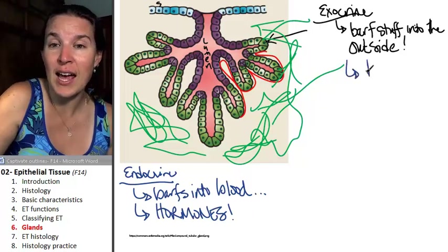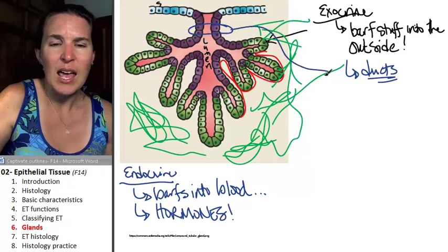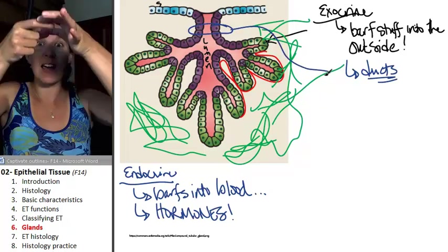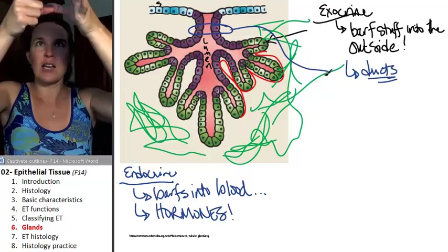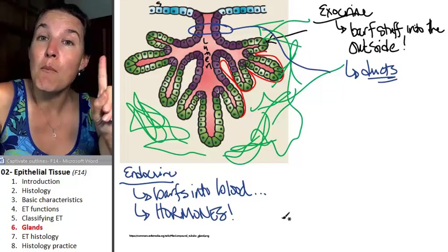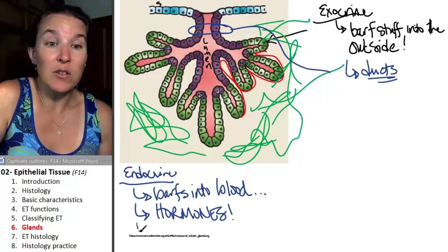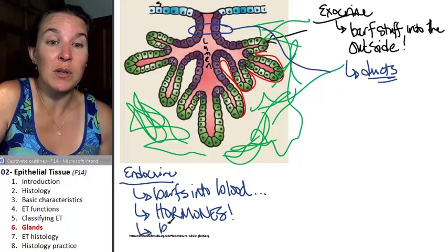Exocrine glands often have ducts. This is an example of a duct. So the duct is like a neck where there's actually a space to go before you get dumped. An endocrine gland most of the time does not have a duct. The goal with the endocrine gland is to be close to the blood supply.